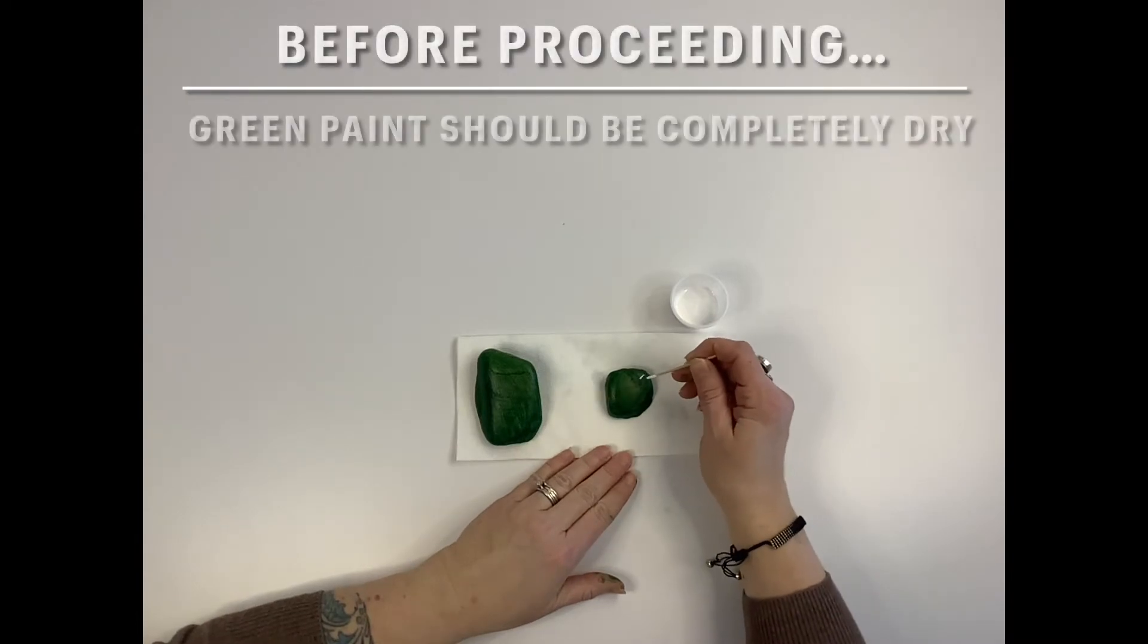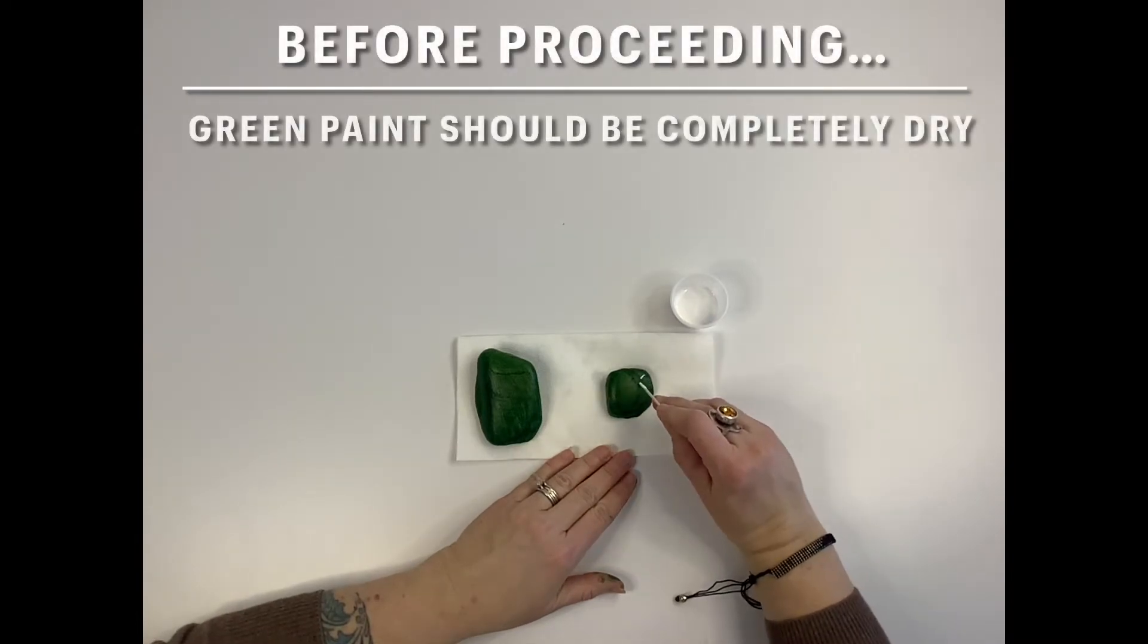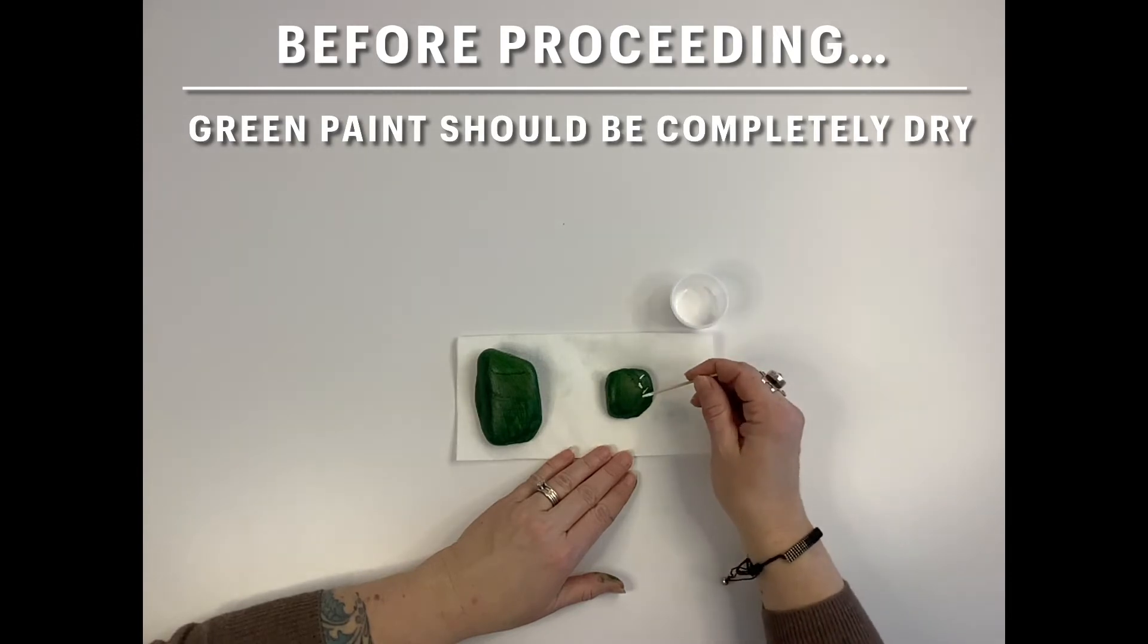Using the toothpick and white paint, add thorns to your cactus. Use the photo from the instructions for ideas.